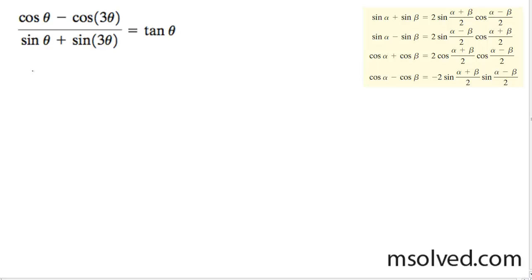Starting off, the numerator is based off of the terms in the fourth equation there. So we can rewrite this as negative 2 sine theta plus 3 theta divided by 2 times sine of theta minus 3 theta divided by 2.